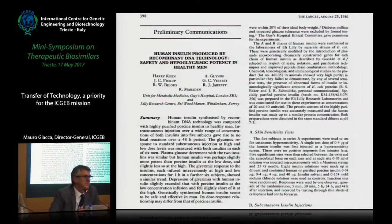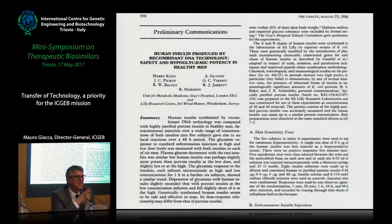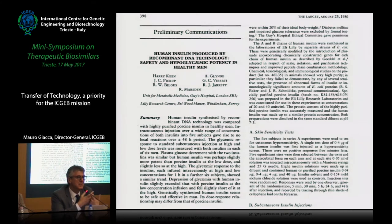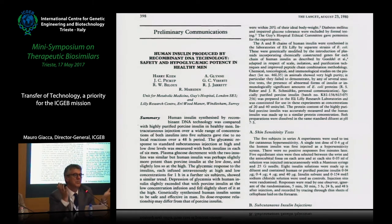I studied in medical school in the early 80s, and at that time we were taught how to deal with diabetic patients injected with insulin produced by cows and pigs — and how to manage immune reactions against proteins from a completely different species. Having insulin of human origin, produced recombinantly, solved all of these issues completely.